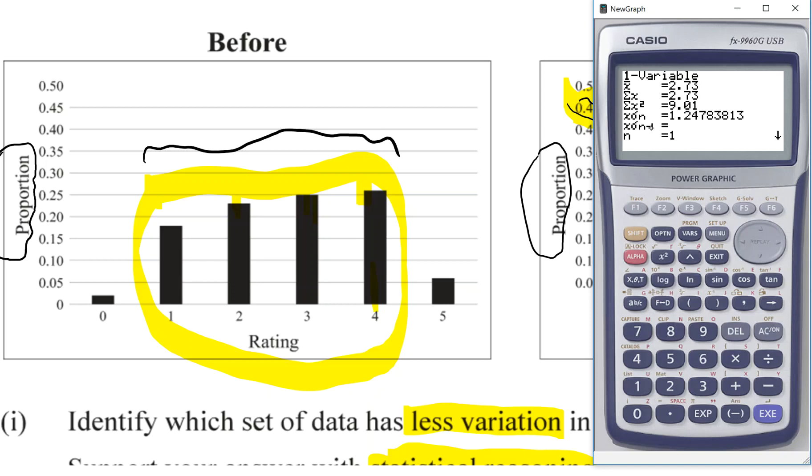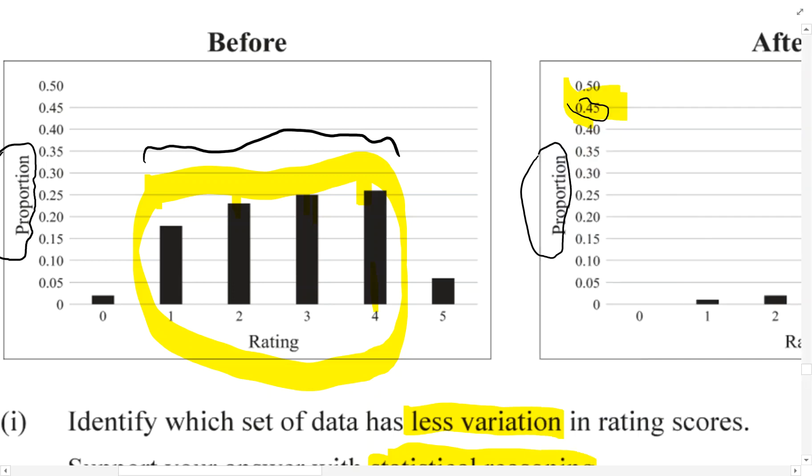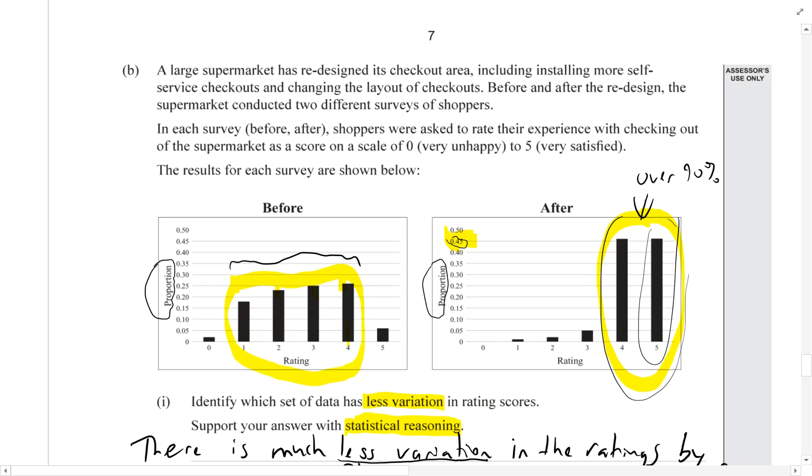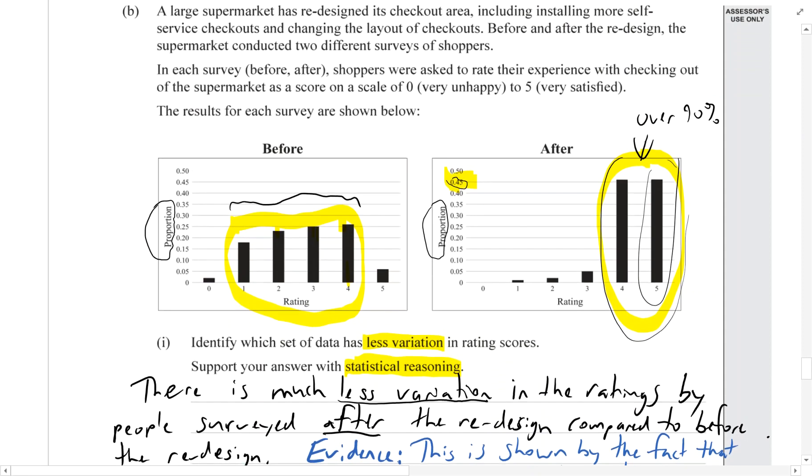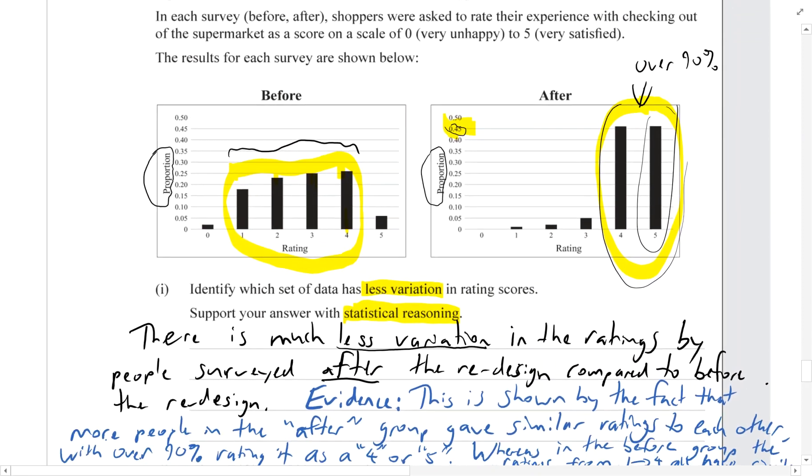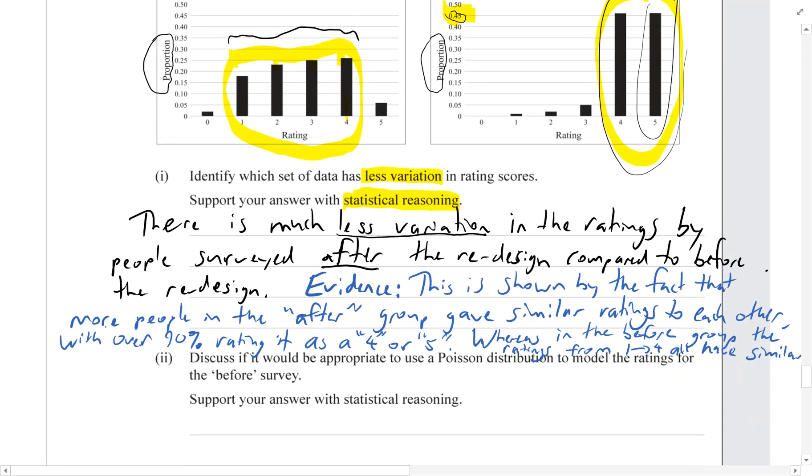The mean is 2.73 for the before group. The standard deviation is the third number from the bottom where we've got the sigma sign, so 1.2478 will be the standard deviation for the before group. If you do that for the after group as well, you will find a smaller value, and then you could use those as evidence - the fact that the standard deviation for the after group is smaller than the standard deviation for the before group. But like I say, I don't think that's necessary, and I've just showed you so that you have that skill if you need it. This answer here would gain full credit.